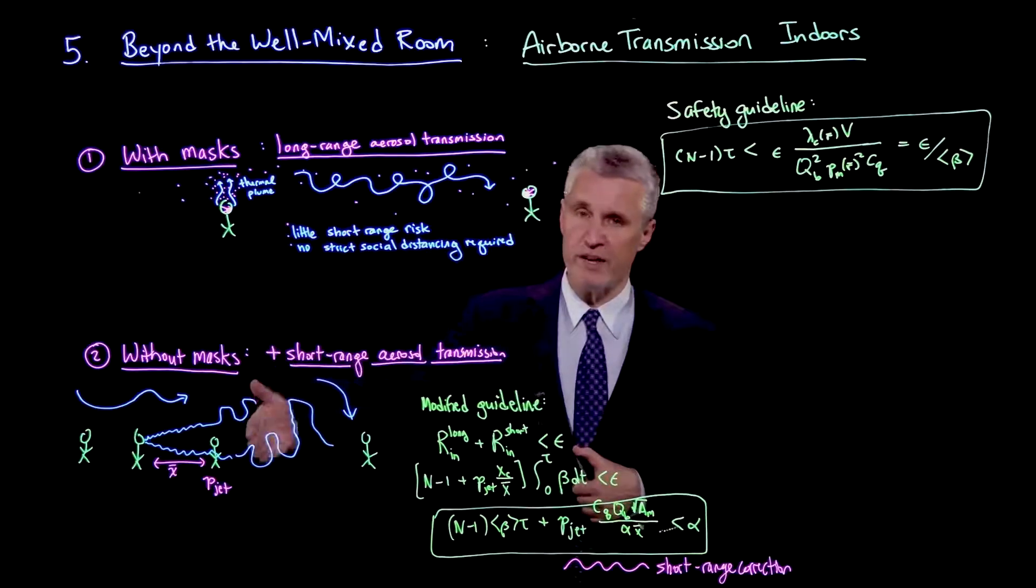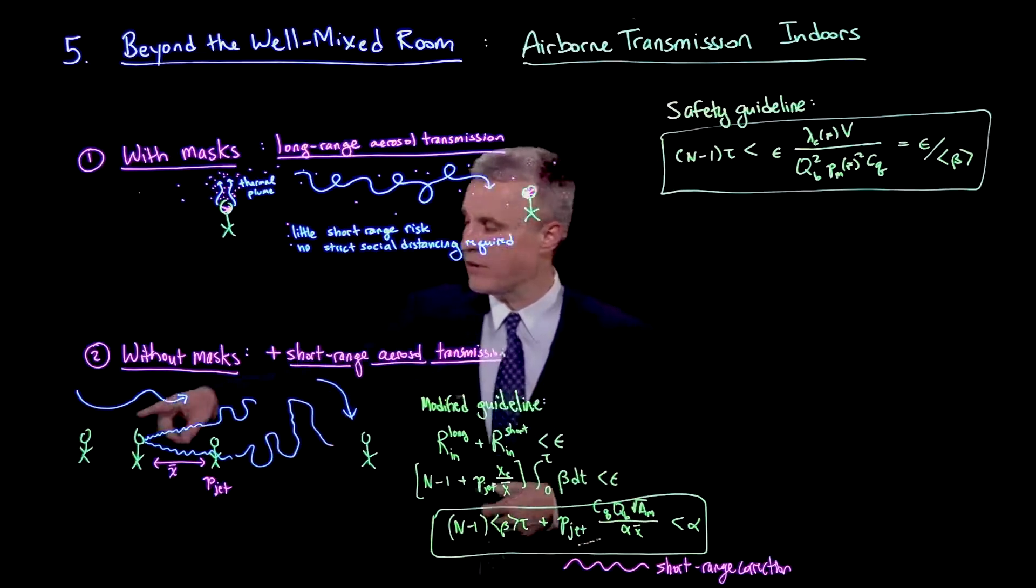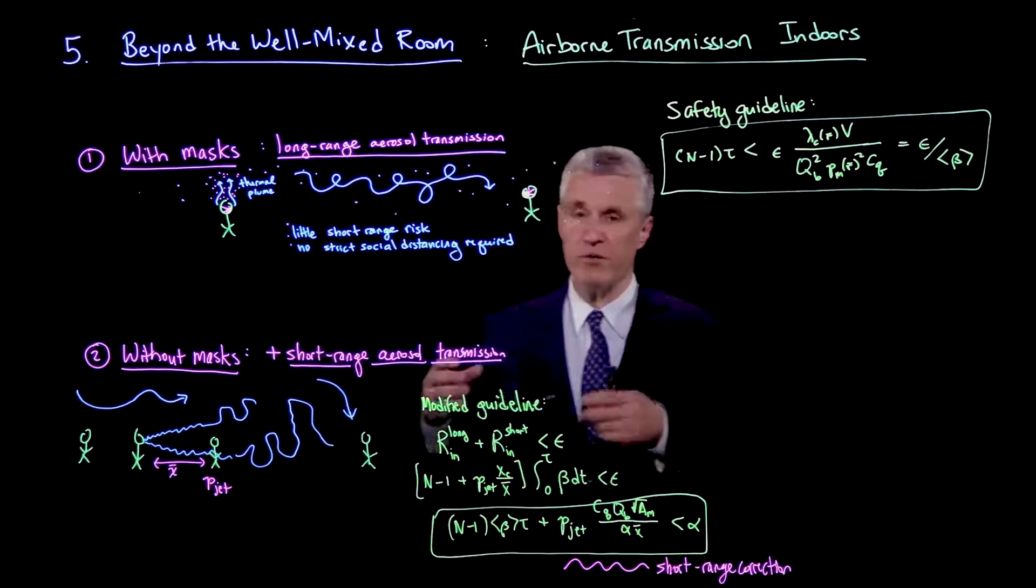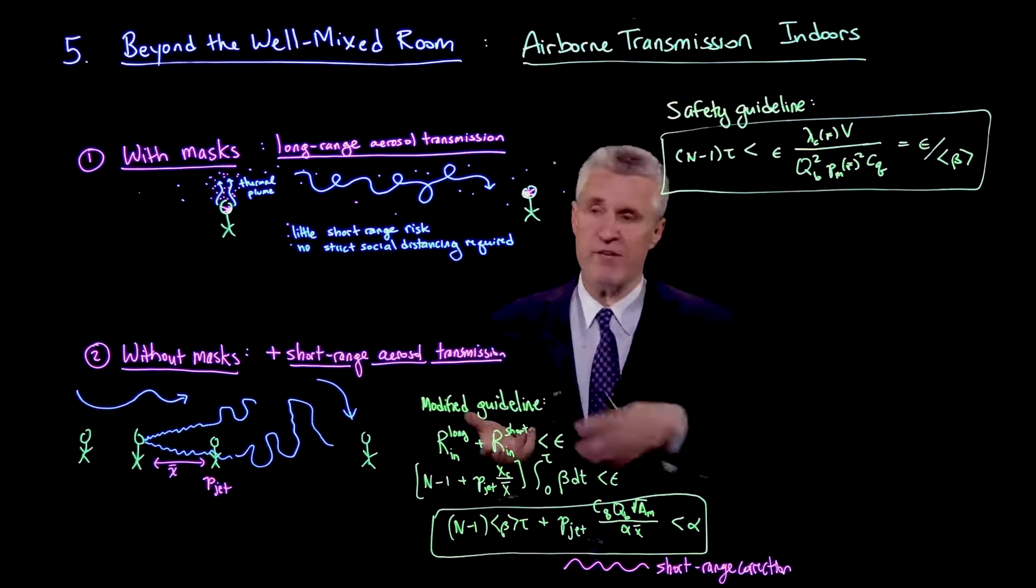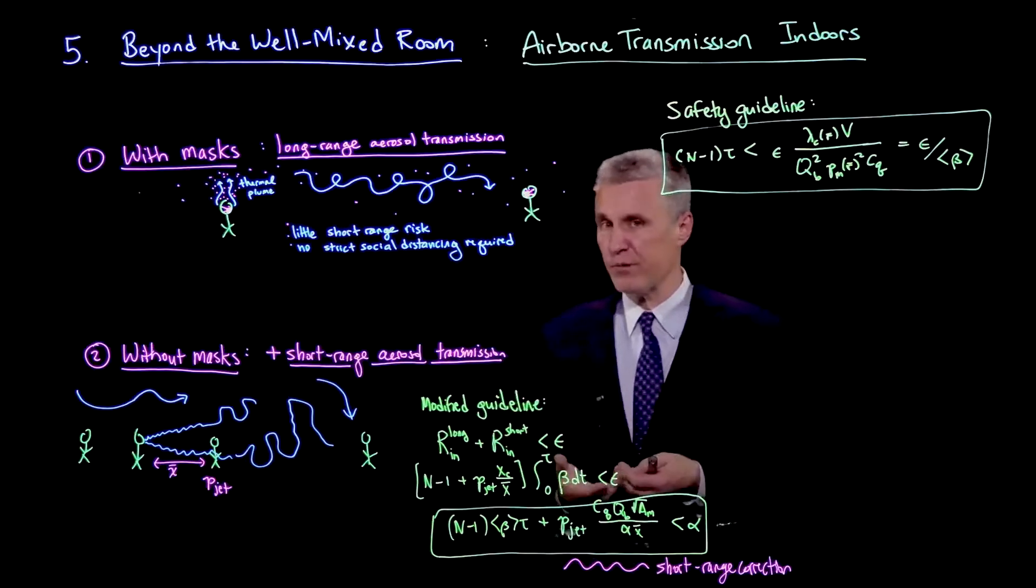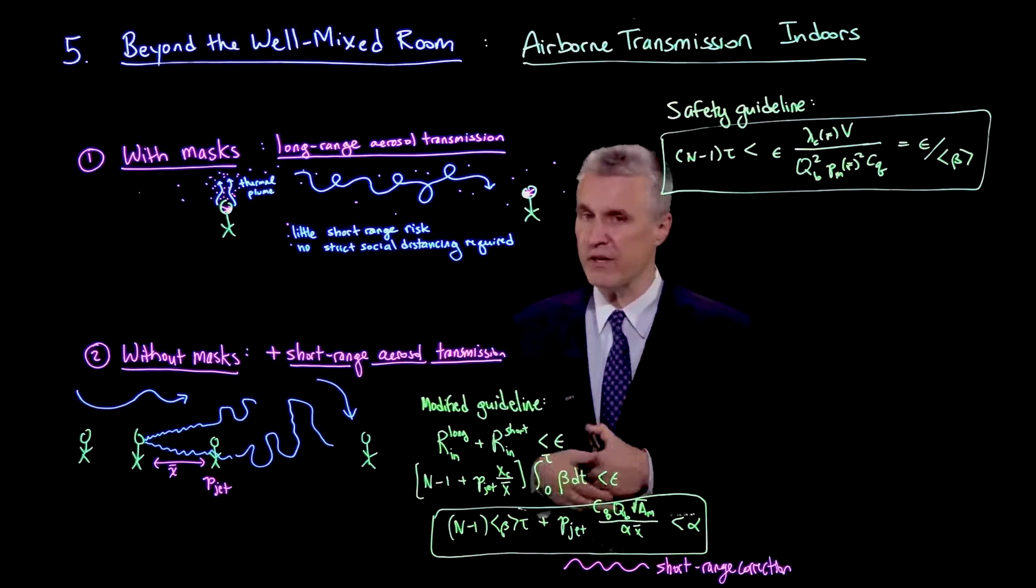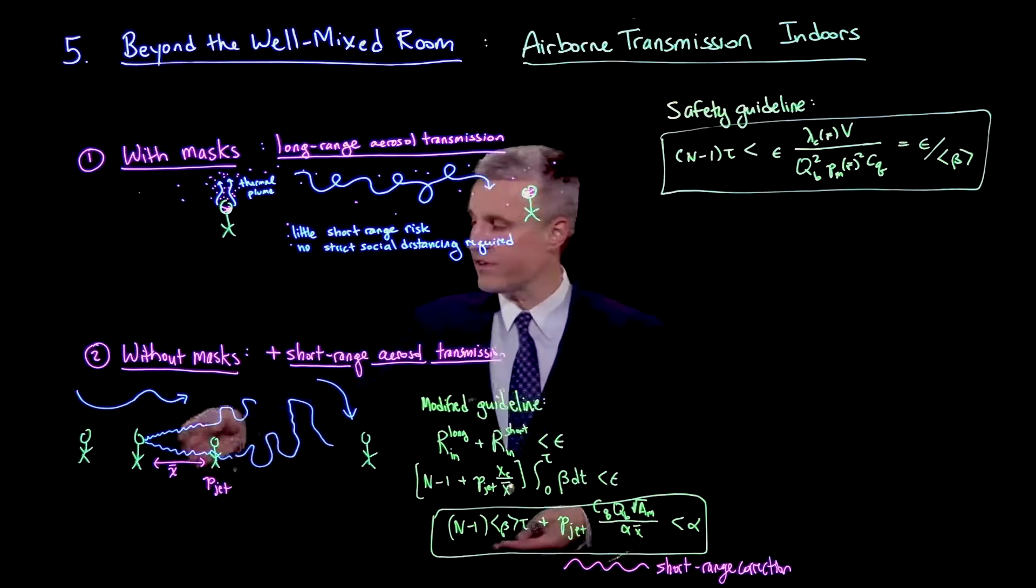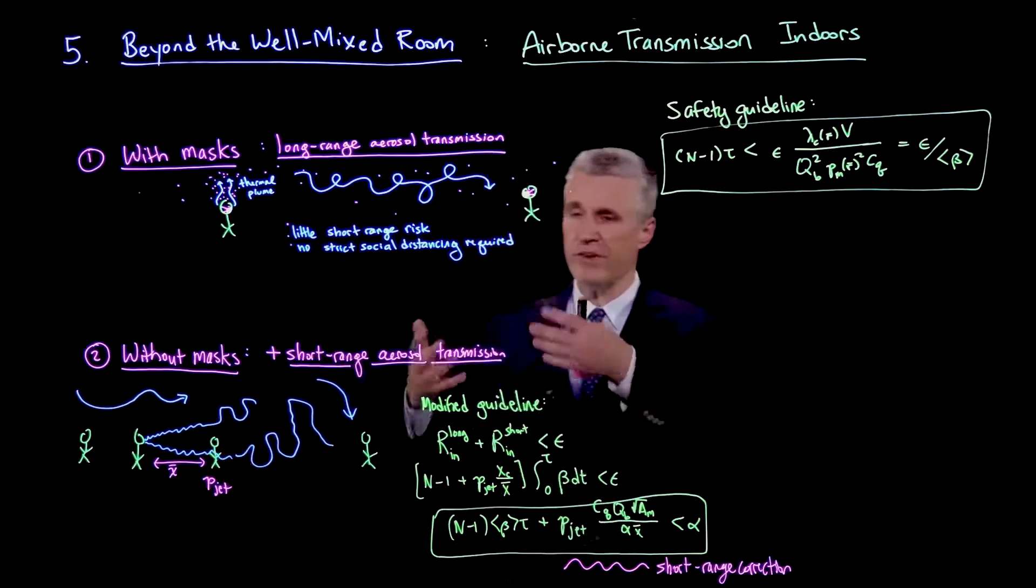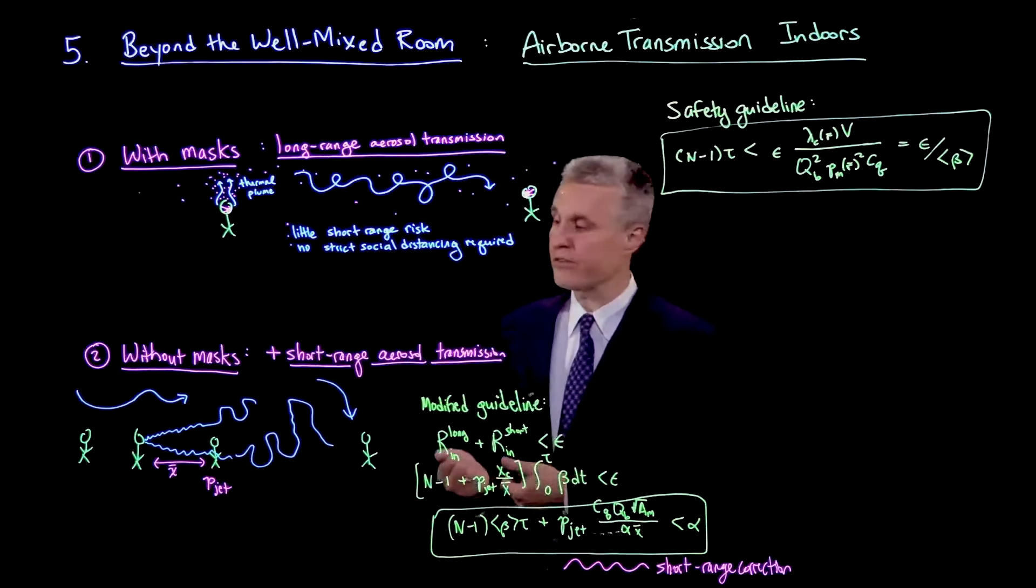So at some point, you hit that point xc where the airborne risk is comparable to the short-range risk. And also, there are people such as the guy sketched back here, which are not in the respiratory jet and probably have a lower risk than the average. So it's definitely important to still consider the average risk coming from the long-range guideline. But one could add a correction to be very conservative for cases such as sketched here, when this poor person is finding himself or herself in the respiratory jet for long periods of time.